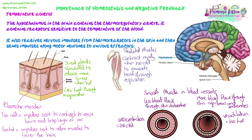So this is temperature control as an example of what happens when you're too hot and too cold — innervated by the nervous system, detected by receptors, with the hypothalamus as the control centre in the brain. This keeps moving body temperature towards that optimum 37 degrees C. We're going to look at blood glucose and osmoregulation in a lot more detail, but temperature control is one of the key examples we need to know.